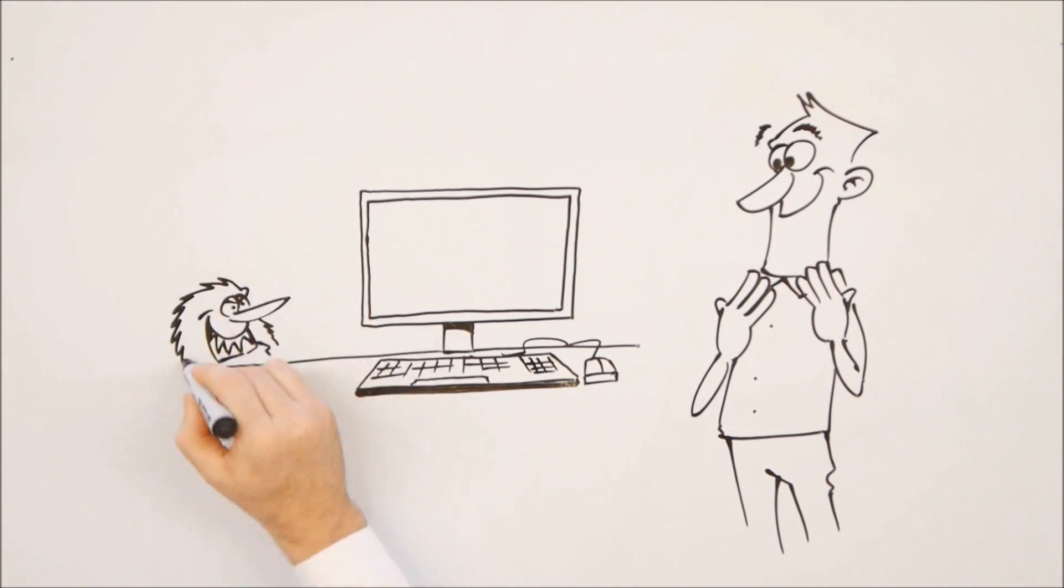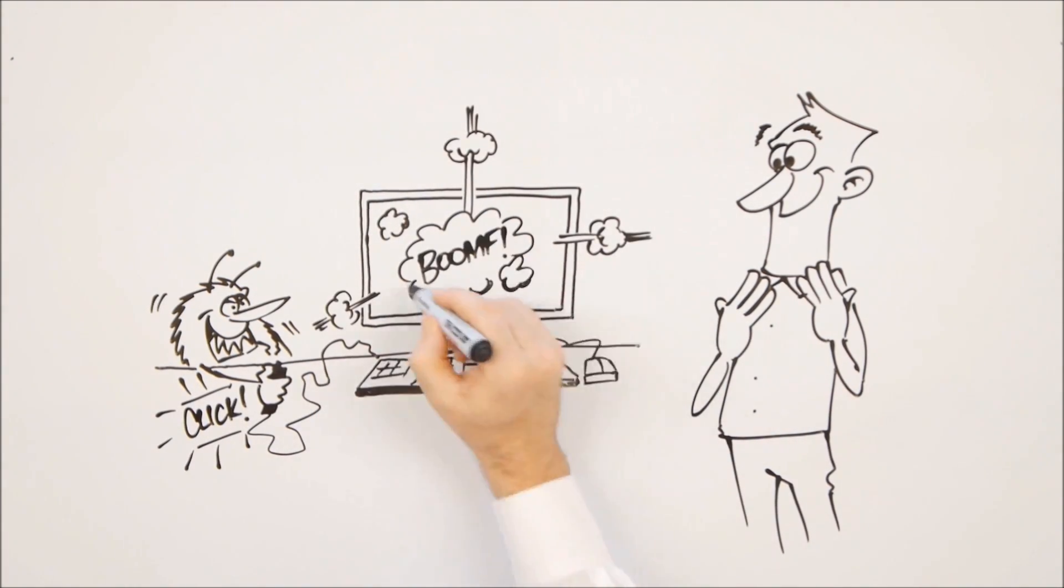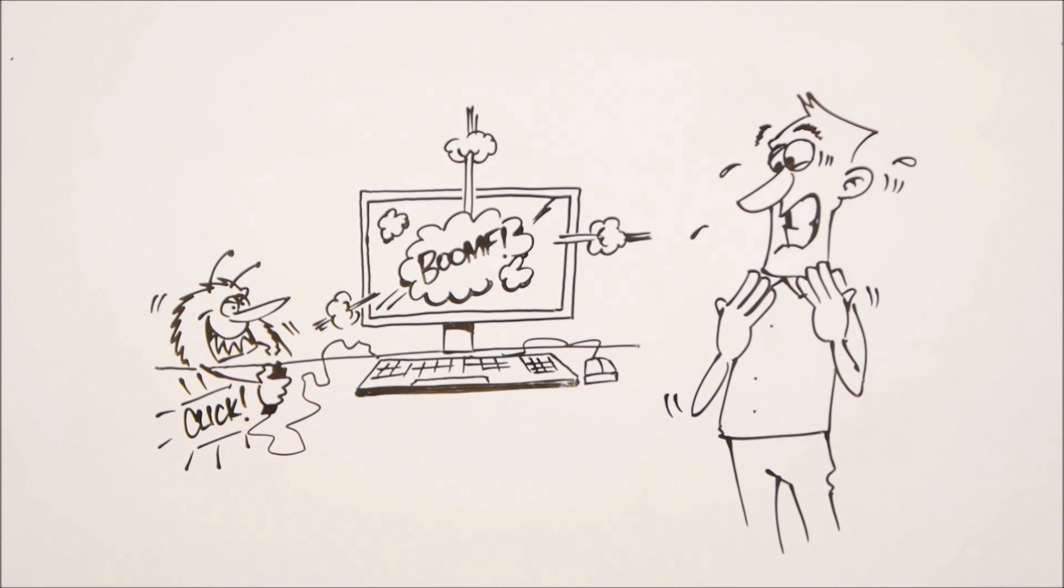The people that attack our systems are not known to us. They don't exist on a map. They are individuals, groups, and can attack from anywhere.